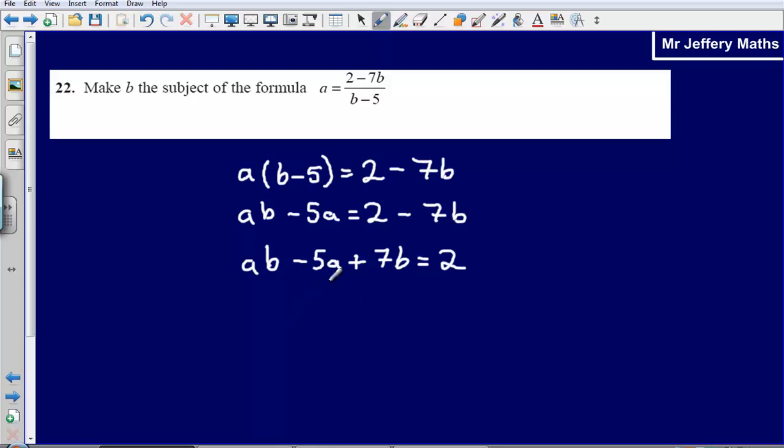The next thing that I am going to do is I have still got a problem, I have got this negative 5a over here. I just want all of my terms that involve b on one side. So I am going to add 5a to both sides. That will get rid of the negative 5a over here and bring it over to here. So I get ab plus 7b and that is going to be equal to 2 plus 5a.